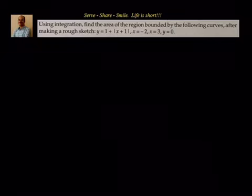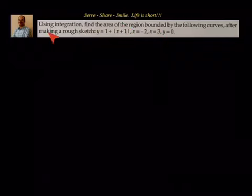We have been given y equals to 1 plus absolute value of x plus 1, x equals to minus 2, x equals to 3, and y equals to 0. We have to find out the area of the region bounded by these curves. x equals to minus 2 and x equals to 3 are vertical lines parallel to the y-axis, and y equals to 0 is the x-axis.